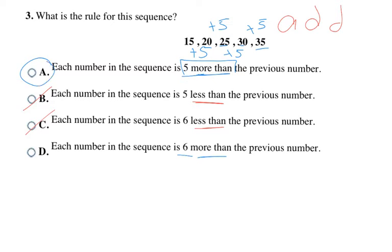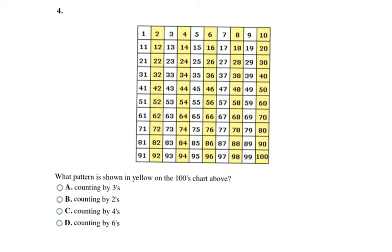Here are patterns seen on a hundreds chart. When looking at a hundreds chart, you count how many times you have to count to get to the next yellow block. Starting at 1: one, two — yellow; one, two — yellow; one, two — yellow. The yellow numbers are 2, 4, 6, 8, 10, 12, 14 — counting by twos. The answer is B. A little tip: the first colored number is 2, which hints we're counting by twos, but always double check.